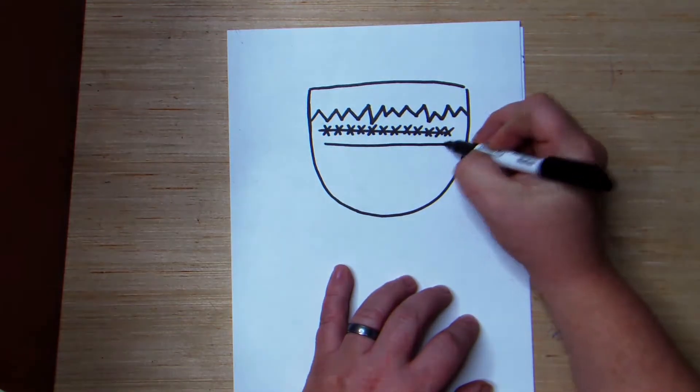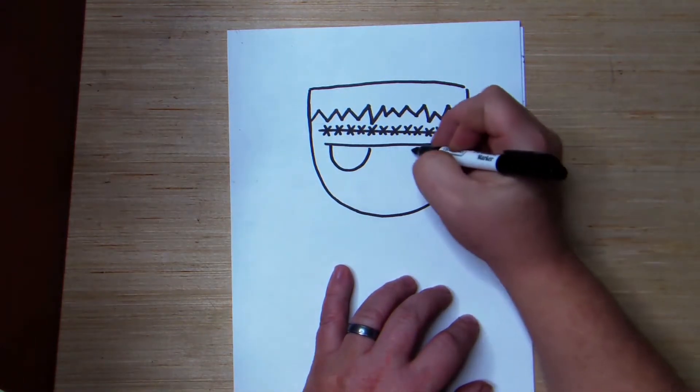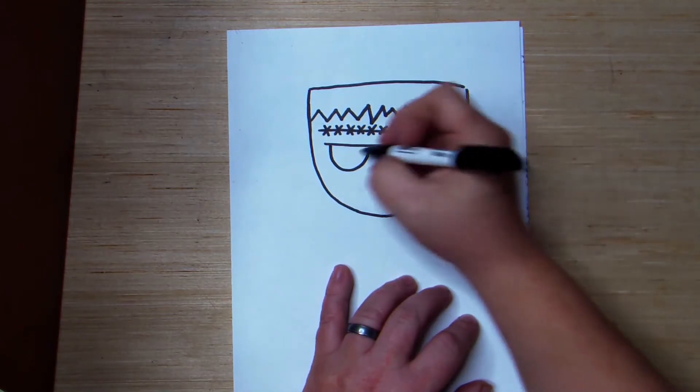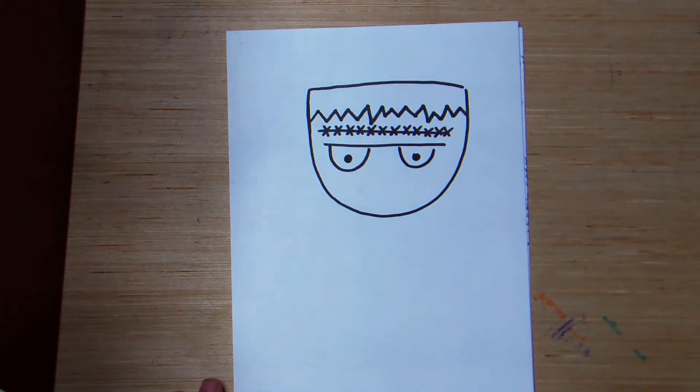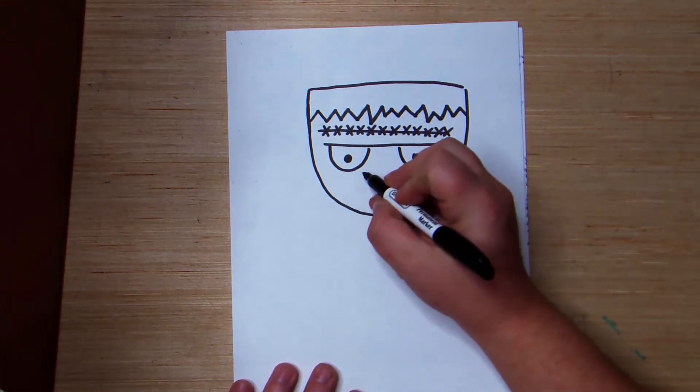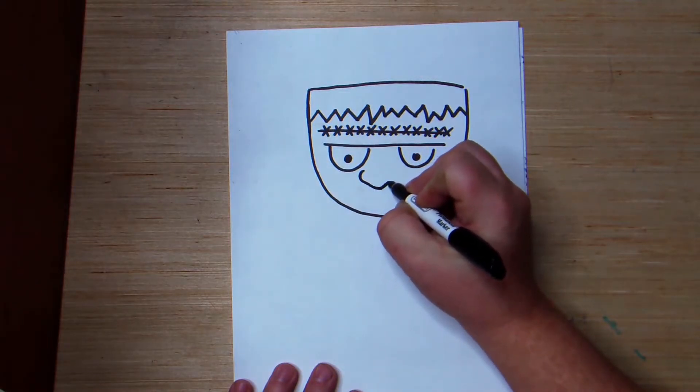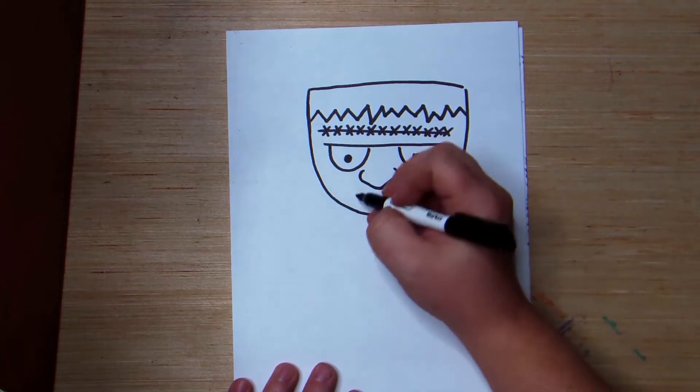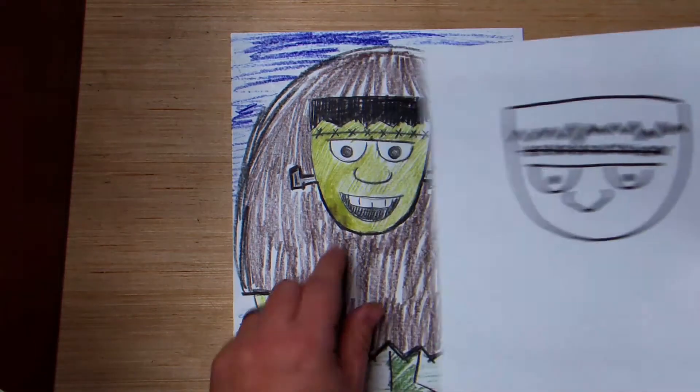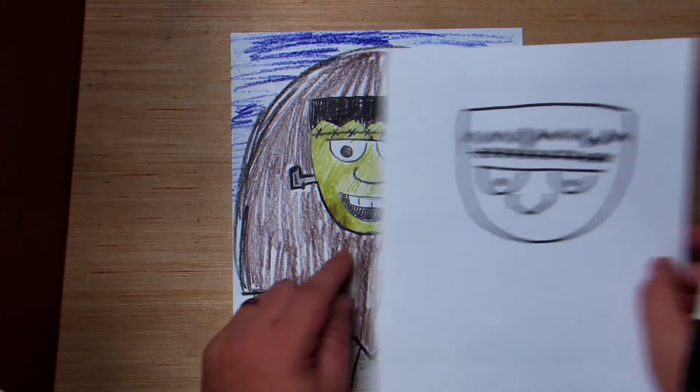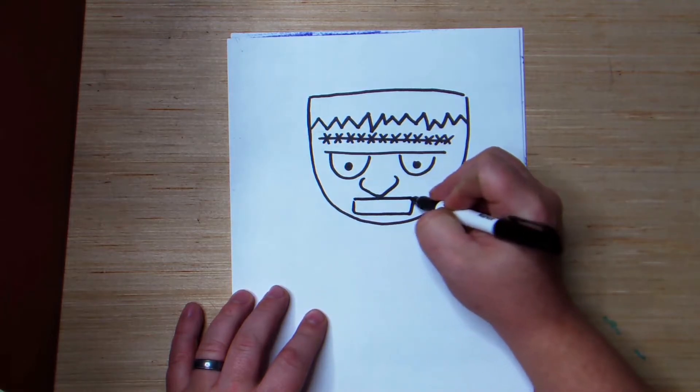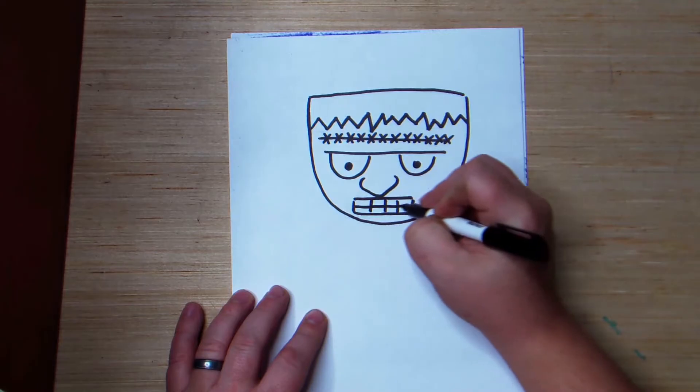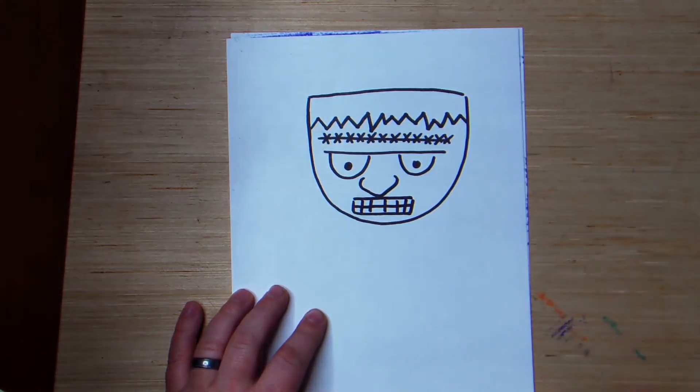Underneath that, another line. I'm going to put some eyes on there, too. Nice little round nose. And then, I'm going to do my mouth a little bit differently on this one. I had Frankenstein smiling in this one. But on this one, I'm going to do something a little bit different. He's going to have a square mouth. Make him look a little more angry.